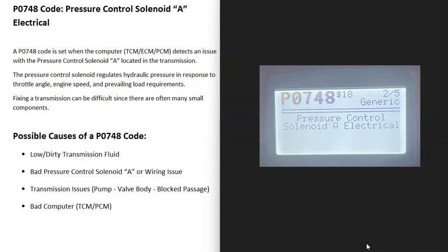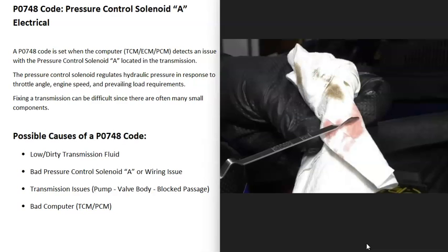What are some possible causes of a P0748 code? The first thing to do, if possible, is go check your transmission fluid and be sure that it's not really low or really dirty. Some vehicles nowadays don't have a dipstick, but if you can, go check it and be sure it's at the correct level because low transmission fluid can cause issues.